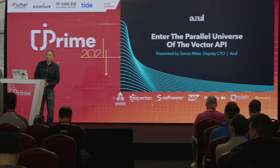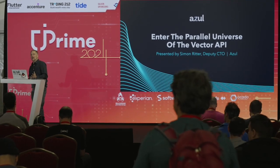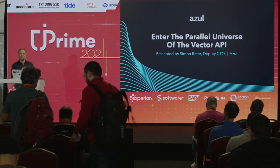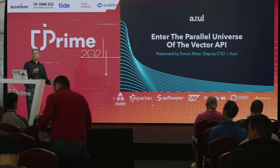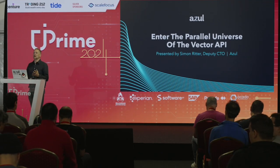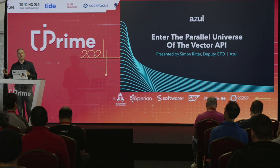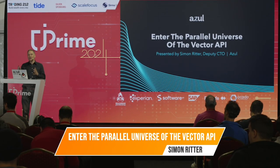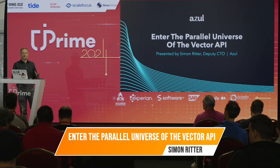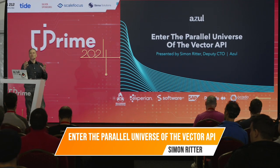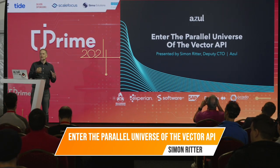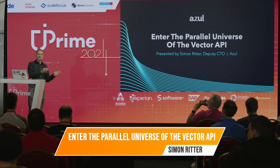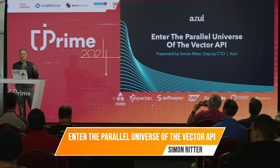Good afternoon. What we're going to talk about now is the Vector API, but this talk is actually going to be a bit more than that. The first part, I really want to talk about how we can improve the performance of applications by using concurrency and parallelism, and also understanding what the difference is between concurrency and parallelism.